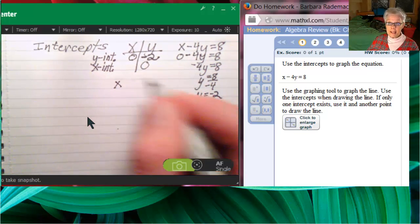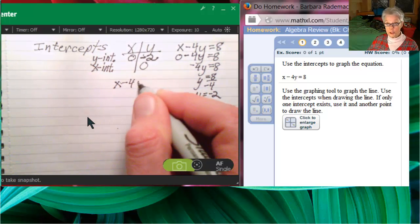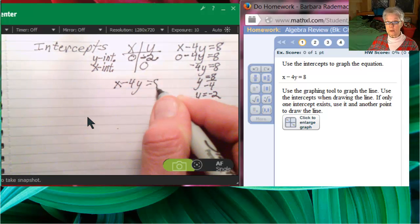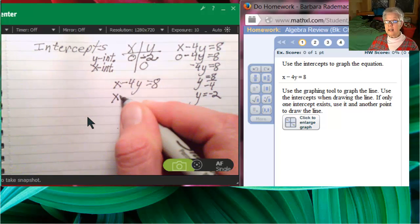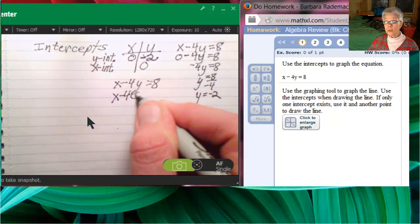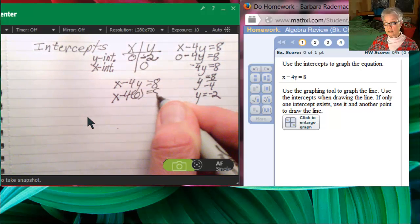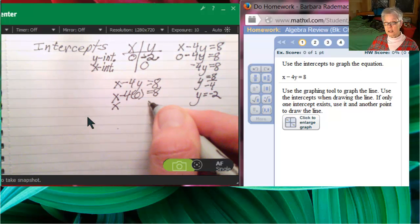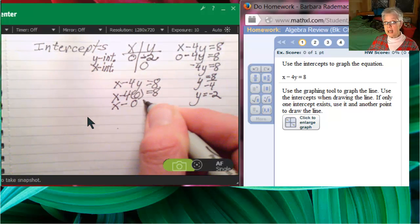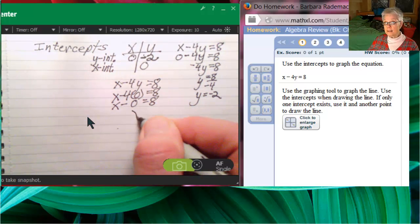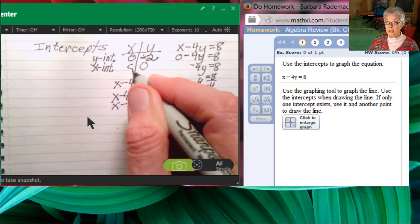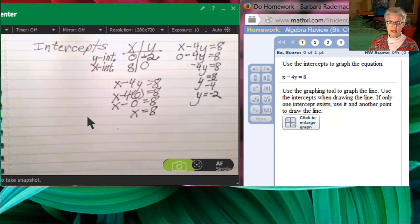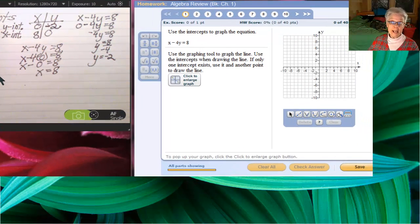Now the x-intercept is what you get when y equals zero. So I'll substitute zero for y in the original equation. So x minus zero equals eight, otherwise known as x equals eight. So if y is zero, x is eight. And that's where the line crosses the x-axis.